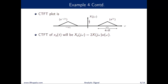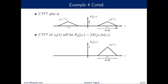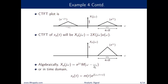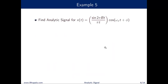The Fourier transform of the analytic signal is 2·X(jω)·u(ω), so only positive frequencies are retained and the factor of 1/2 becomes 1. We can write X_a(jω) = e^(jφ)·M(j(ω−ωc)). Taking the inverse Fourier transform, x_a(t) = m(t)·e^(j(ωct + φ)).